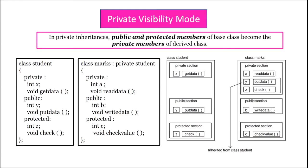In private visibility mode, public and protected members of the base class become the private members of the derived class. Taking the same example of class student and class marks — class marks is now inheriting class student privately (class marks colon private student). After inheritance, the private section of class marks contains a and read_data which are already its own members, but it also contains y and put_data (public members of class student) and z and check (protected members of class student). So both the public and protected members of class student move to the private section of class marks.